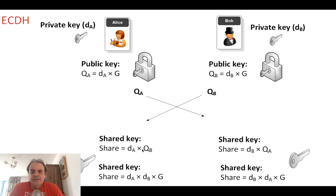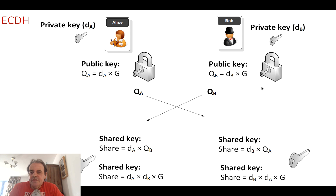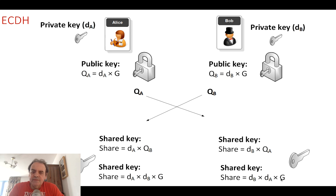Next, Alice takes Bob's public key and performs scalar multiplication with her private key DA, which she keeps secret. On the other side, Bob takes his private key DB and multiplies it by Alice's public key. Working through the math: QB equals DB times G, so Alice computes DA times DB times G. Bob computes DB times QA, and QA equals DA times G — giving DB times DA times G. These are the same because multiplication order doesn't matter, so they end up with the same shared key.